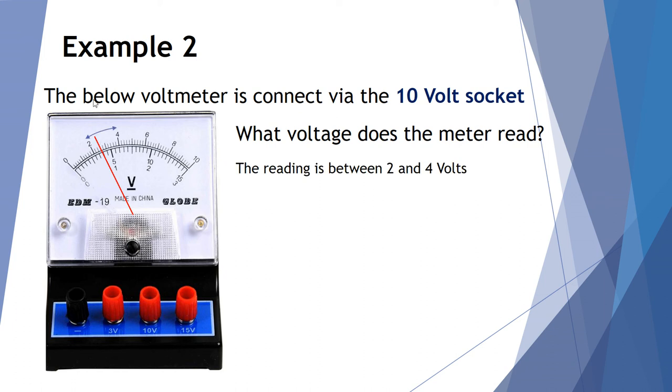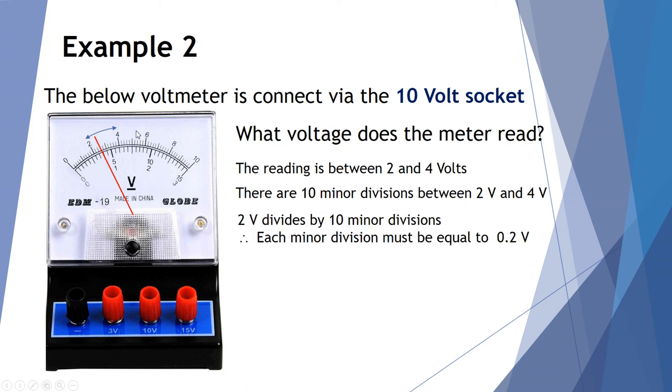Let's see how we go. Now it's somewhere between 2 and 4 volts. Again, there's 10 divisions between 2 and 4 volts. So that is a difference of 2 volts divided by 10 divisions means each individual division is worth 0.2 of a volt. So here we've got 2 volts plus a further 1, 2, 3 divisions. Three minor divisions each of 0.2 of a volt means I'm going to have 2 plus 0.6, 2.6 volts.